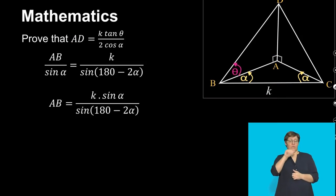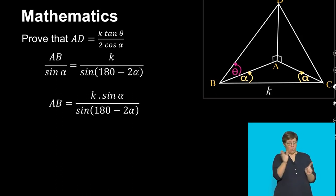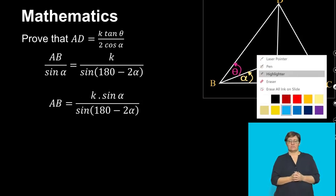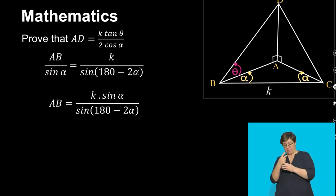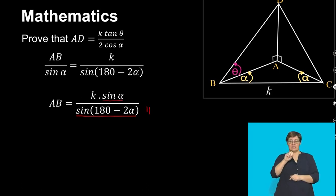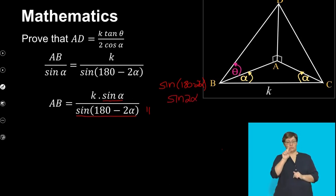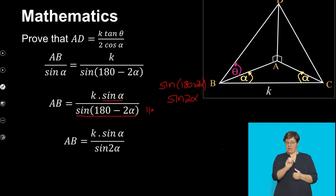Now we need to do a bit of algebra. We've multiplied through by sin α on both sides. This is a reduction — second quadrant — and since sine is positive in the second quadrant, sin(180° − 2α) simplifies to sin(2α). So the whole expression becomes sin(2α), and AB = k sin α / sin(2α).